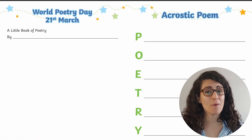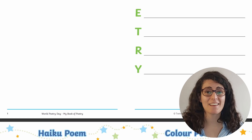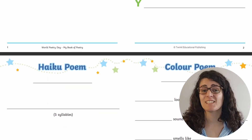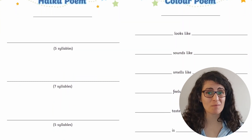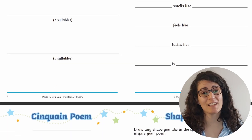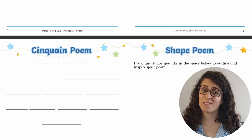Idea number three is a poetry book. Twinkle has this World Poetry Day book which you can easily download and print to use with your class. It's full of templates of different kinds of poems so children can progressively fill it out as they learn about each one. This can also give them a better idea about what kinds of poetry they like to write and read, as you read through different examples of these types of poems in class.